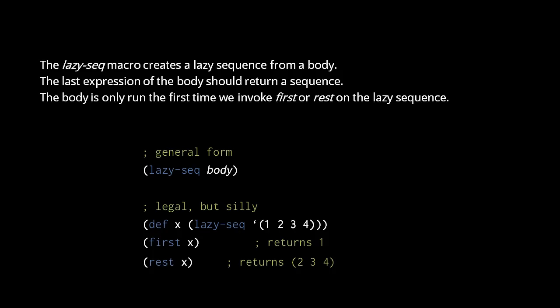Here we assign to X a new lazy sequence whose body simply returns a list of four values. This body is executed the first time we call either first or rest on the lazy sequence, and the returned sequence is then cached for later calls to first or rest. So be clear that the function encapsulated by the lazySeq only ever runs once.